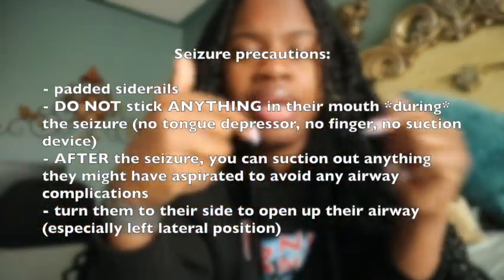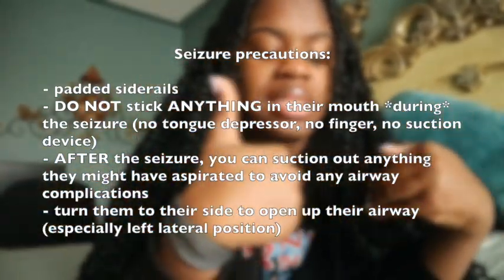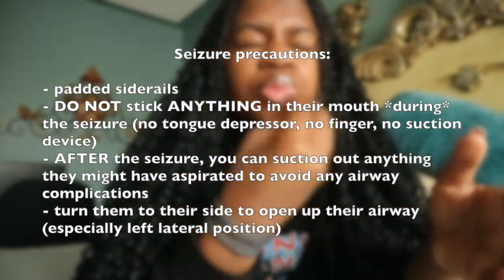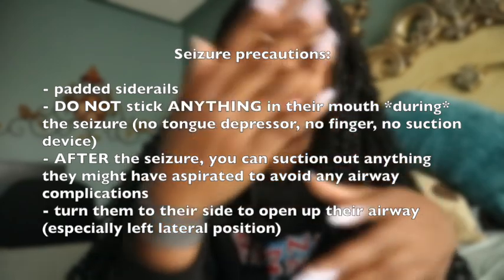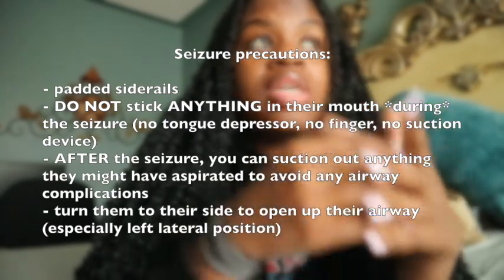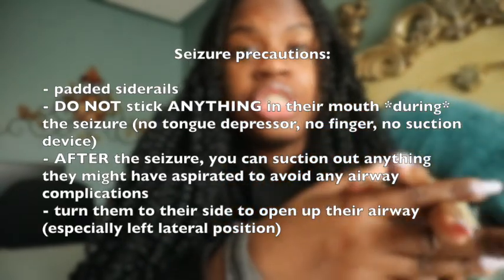Seizure precautions for low sodium include padded side rails (to prevent injury if seizing), a suction device in the room (to clear secretions after seizure), and turning the patient to the side (left lateral position) to maintain the airway. Do not put anything in their mouth during a seizure.